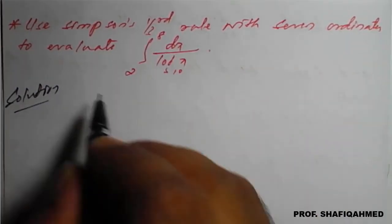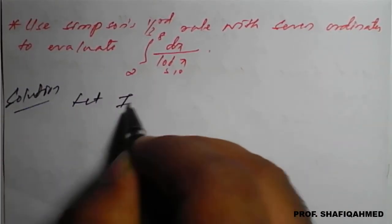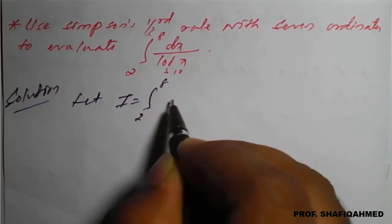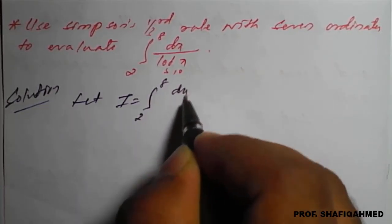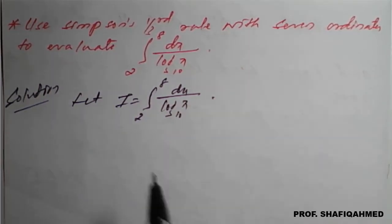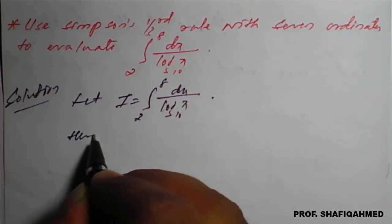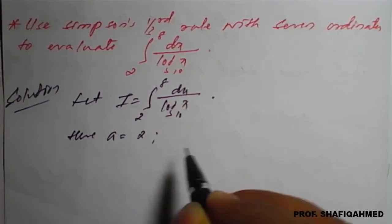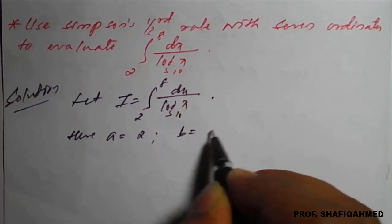The solution: for Simpson one third rule, let the integral I equal the integration from 2 to 8 of dx divided by log of x to the base 10. Here, the value of a is 2, and the value of b is 8.